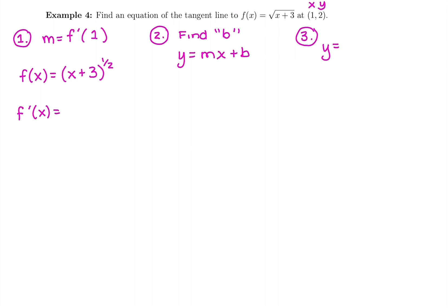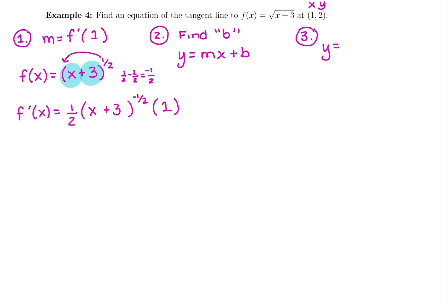The only way to make finding an equation of a tangent line harder is to have a harder derivative. So we're going to bring down this power, one-half, and subtract one for the new power. One-half minus one: subtracting two halves gives us a negative one-half power. One-half minus one is negative one-half. You bring down the power, subtract one for the new power, you get the original piece on the inside. The last part of the chain rule is multiplying by the derivative of the original inside. Derivative of 1x is 1, and the derivative of 3, that's a constant, so its derivative is 0. So bring down the power, subtract one for the new power, put the original on the inside still, and then multiply by the derivative of the inside, which is just 1. You could leave it just like this and plug in your x value if you want to.